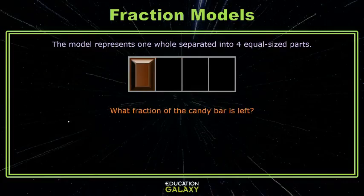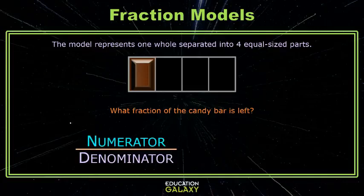Well, remember, our fraction is a numerator over a denominator. The denominator tells us the number of parts the whole is divided into. In this case, it's four pieces. Now, the question is, what fraction of the candy bar is left? How many pieces of the four pieces are left? Just one. One little piece is one-fourth of the candy bar.